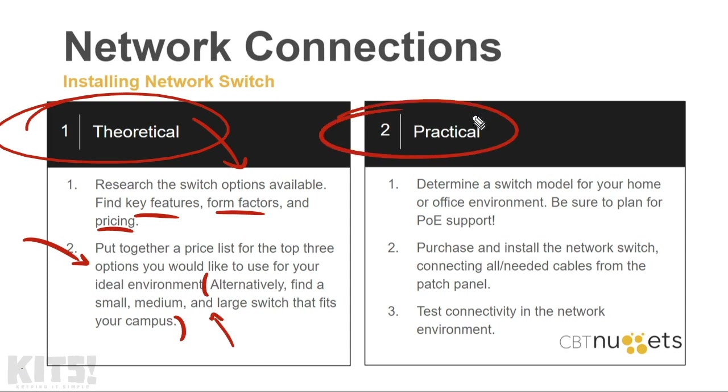From there we go practical. Determine which switch model you would like to use for your home or office environment. Be sure to plan for PoE support. Power over Ethernet adds quite a bit to the price tag of the switch. And you may not think you need it right now, but if you buy a switch without it, and then in a year end up adding devices that do need it, you have to replace the whole switch. There's no option to add PoE to one that doesn't have it. So think ahead of the places you'll go. From there, purchase and install the network switch, connecting all the needed cables from the patch panel. And finally, test connectivity in the network environment. At this point in the series, seeing the green light come on on the switch for devices that you have plugged in is good enough. We'll start getting to the IP addressing and internet access later on.